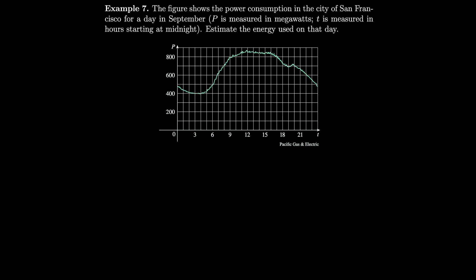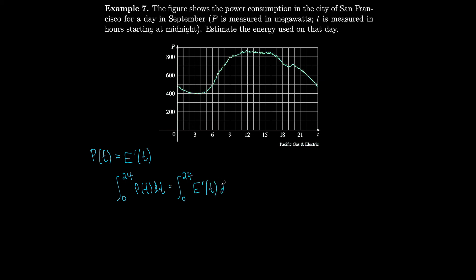A figure shows power consumption in San Francisco for a day in September. P is measured in megawatts and t is measured in hours starting at midnight. Let's estimate the energy used that day. Power is the rate of change of energy — P(t) is the derivative of the energy function E(t). So integrating P(t) from zero to twenty-four gives the net change in energy over that day.